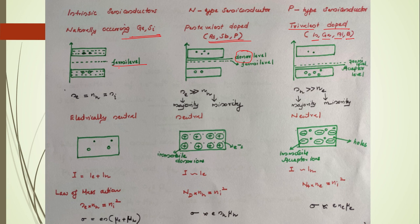Consider the location of the Fermi level for intrinsic, n-type, and p-type semiconductors. For germanium and silicon, temperature agitation breaks covalent bonds, producing equal numbers of electrons and holes. The number density of electrons equals that of holes in an intrinsic semiconductor, so the Fermi level lies exactly in the middle of the energy gap.